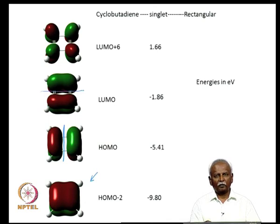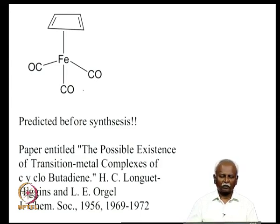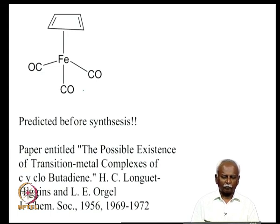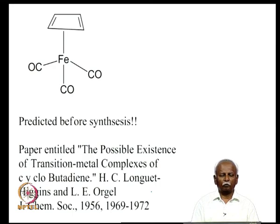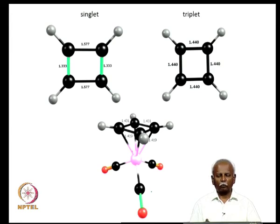These molecular orbitals can be interacted with metal orbitals in the same way as before, giving a nice molecular orbital picture for a cyclobutadiene metal complex. When cyclobutadiene interacts with a metal, it very often adopts a square geometry. This molecule was in fact predicted before it was synthesized — the prediction was published in 1956 by Orgel and Higgins.